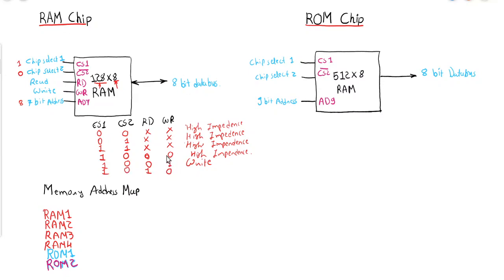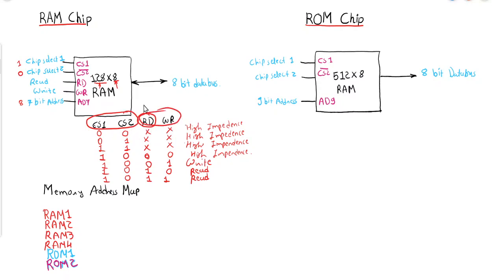If read/write is 1,0, a read operation will be performed. If read/write is 1,1, then read is given higher priority and a read operation will be performed. So the two important parameters for a RAM chip are the chip select inputs and the read/write input, which specify what operation will be performed.